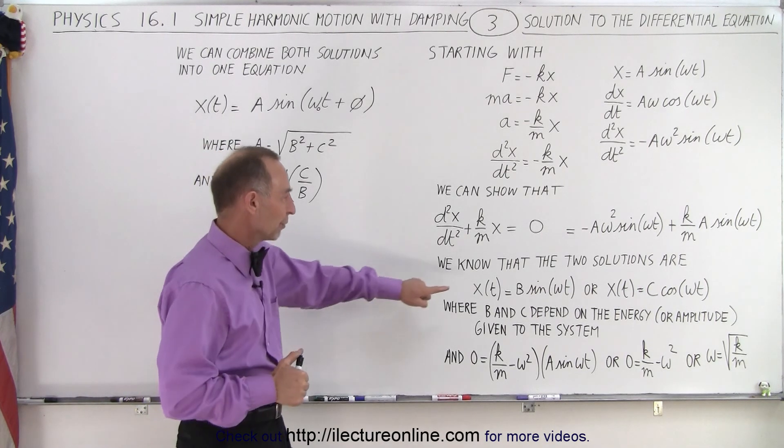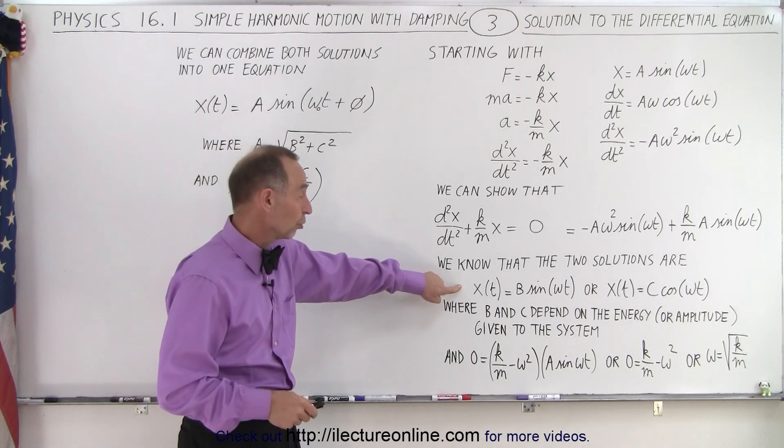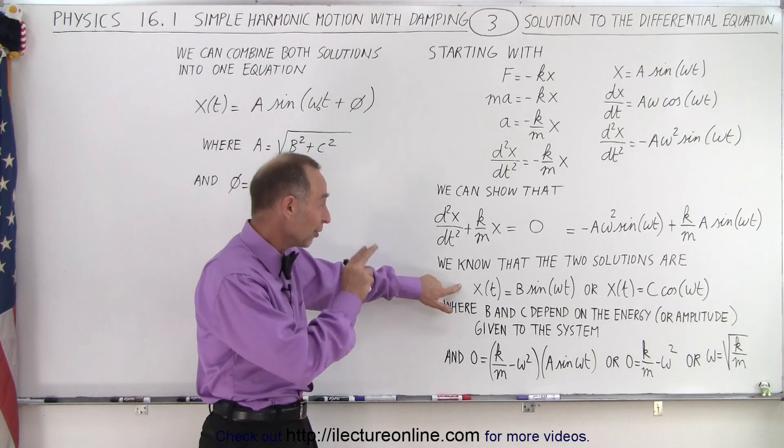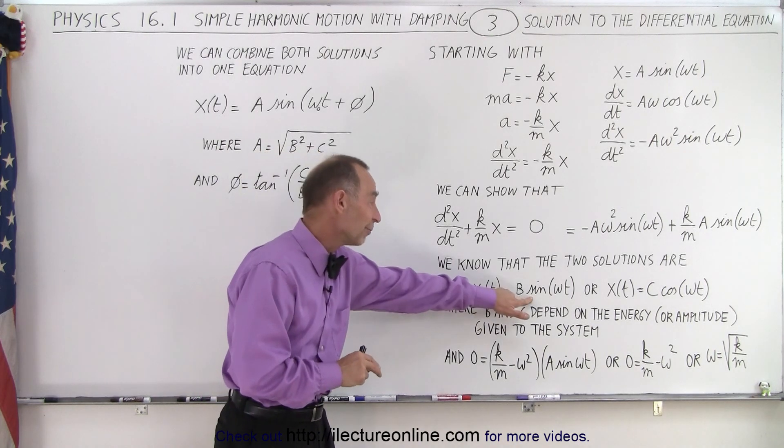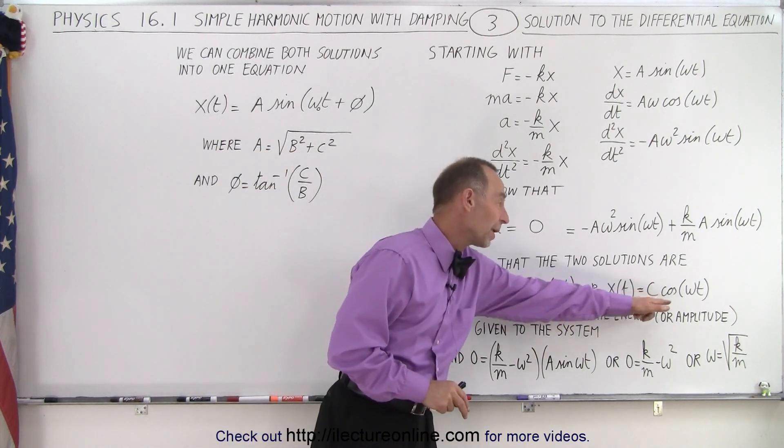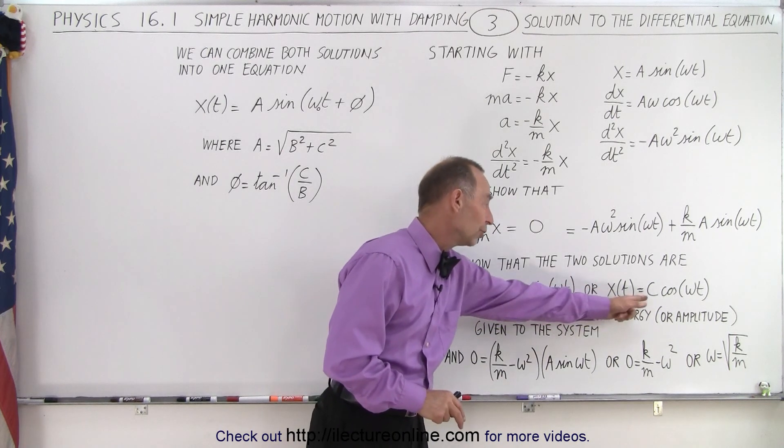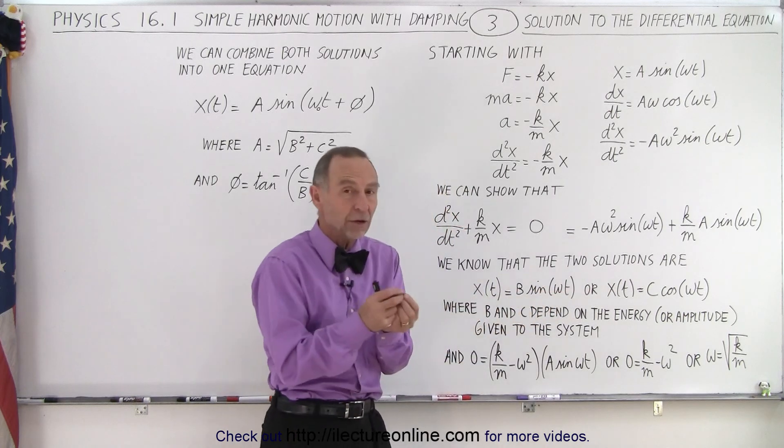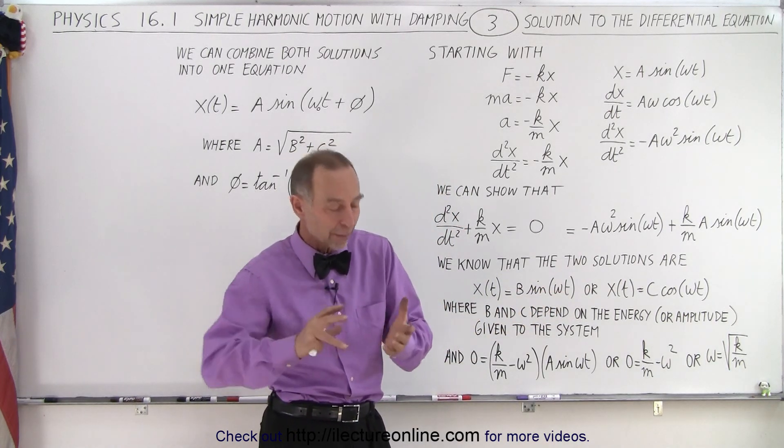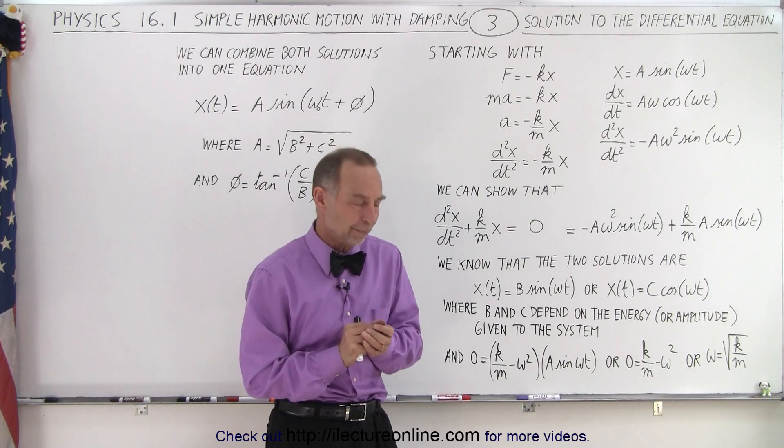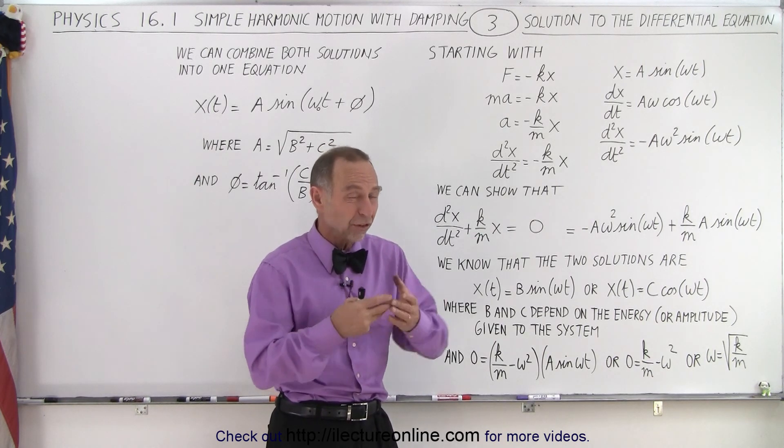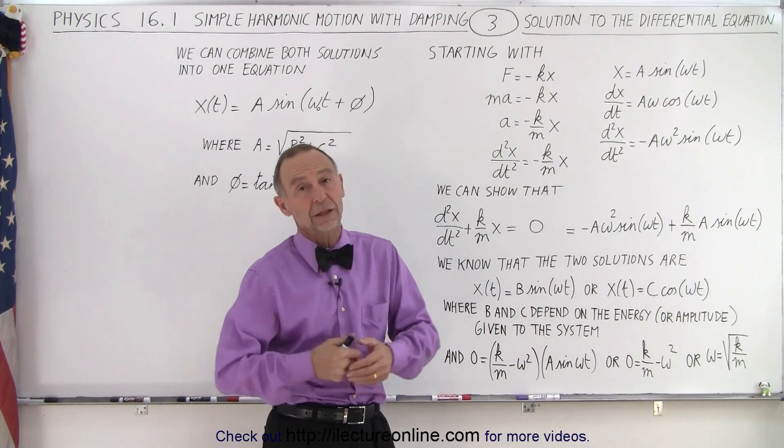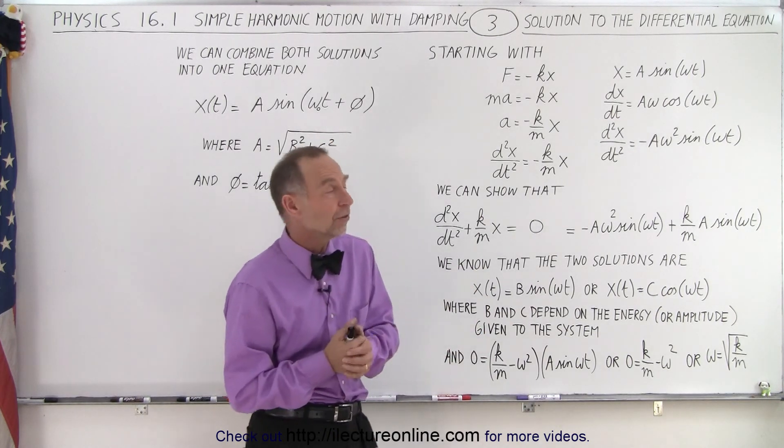We knew from an earlier video that the two possible solutions to the differential equation are either the sine of omega t or the cosine of omega t, with an amplitude associated with B or C. The reason why I put down B or C is because the magnitude depends upon the amount of energy you put into the system. The more energy you put into the system, the greater the amplitude. So B and C are definitely amplitude dependent, and let's assume we can have two different constants there.